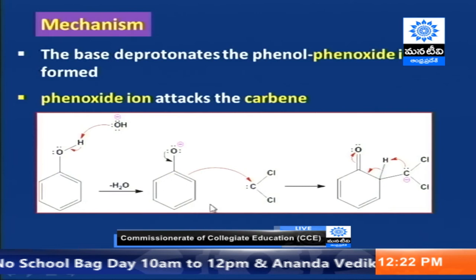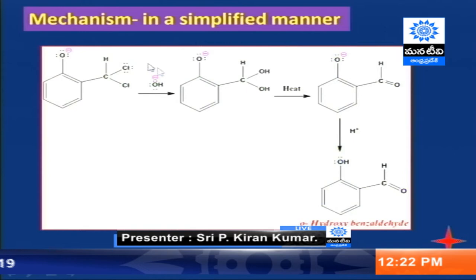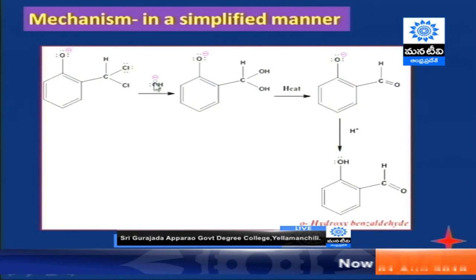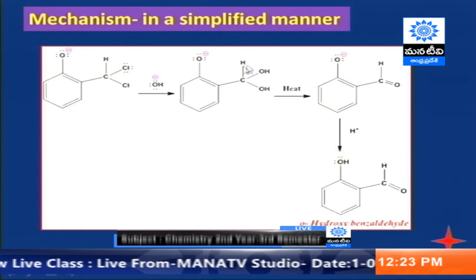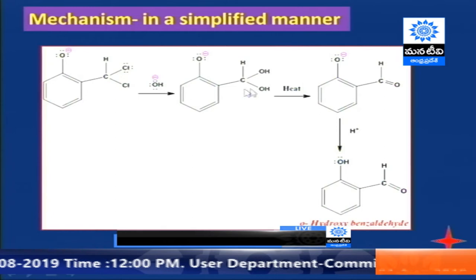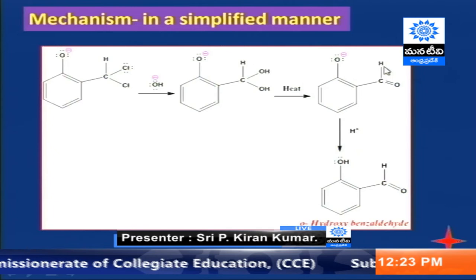The mechanism can also be represented in a simplified manner. Once dichlorocarbene attacks the ortho position, we obtain an intermediate. In the presence of hydroxide ion, we get a dihydroxy compound. Since a carbon bearing two hydroxy groups is highly unstable, on heating it loses a water molecule to give the aldehyde, and acidic workup yields orthohydroxybenzaldehyde.